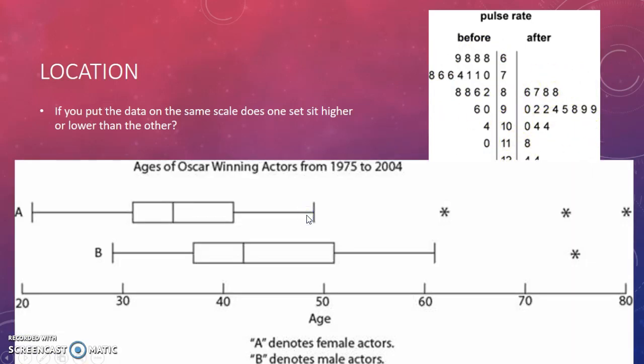You can also do it with box plots. We're looking at who won the Oscar, male and female. A is the females, B is the males. You can see as a general rule, male actors who won an Oscar tend to be older than female actors who won an Oscar. So that's a comparison of the location in age.